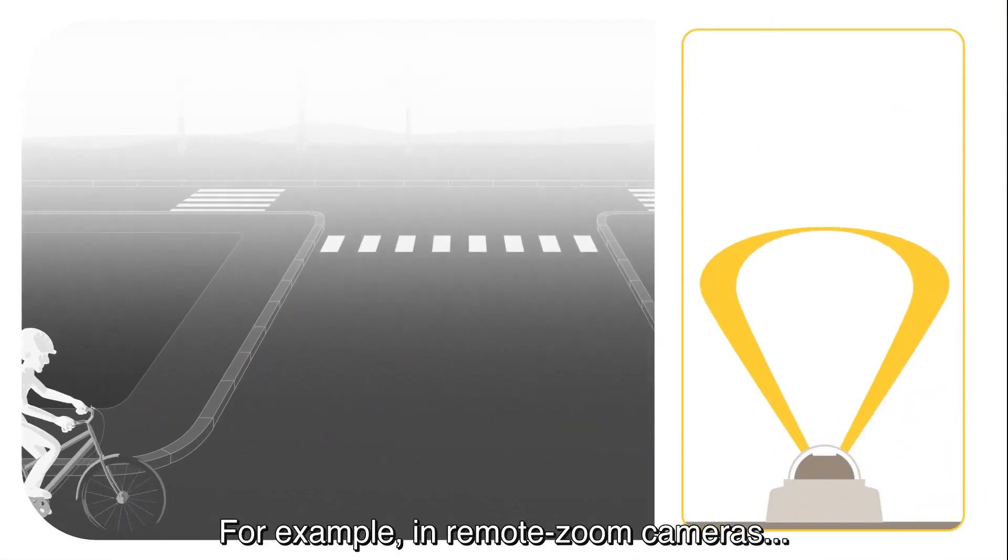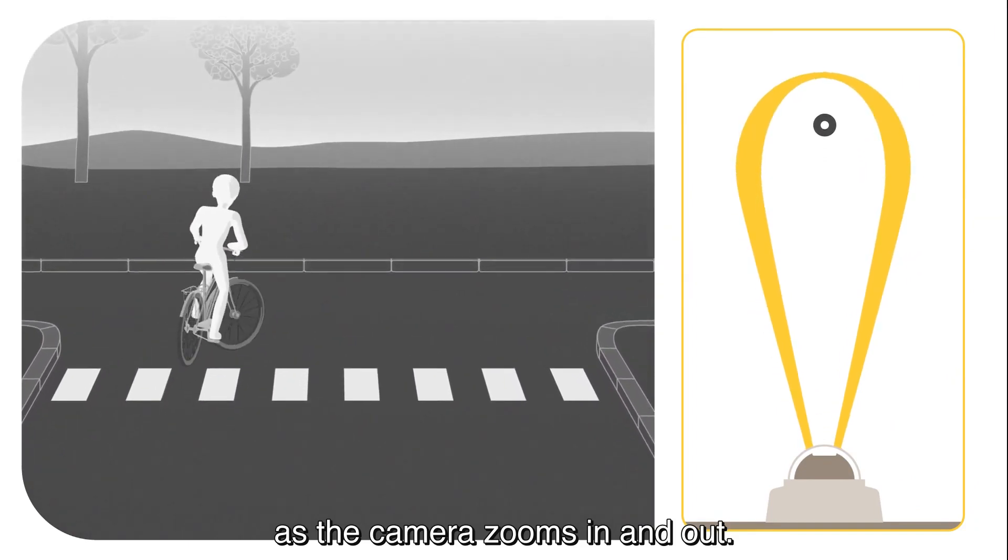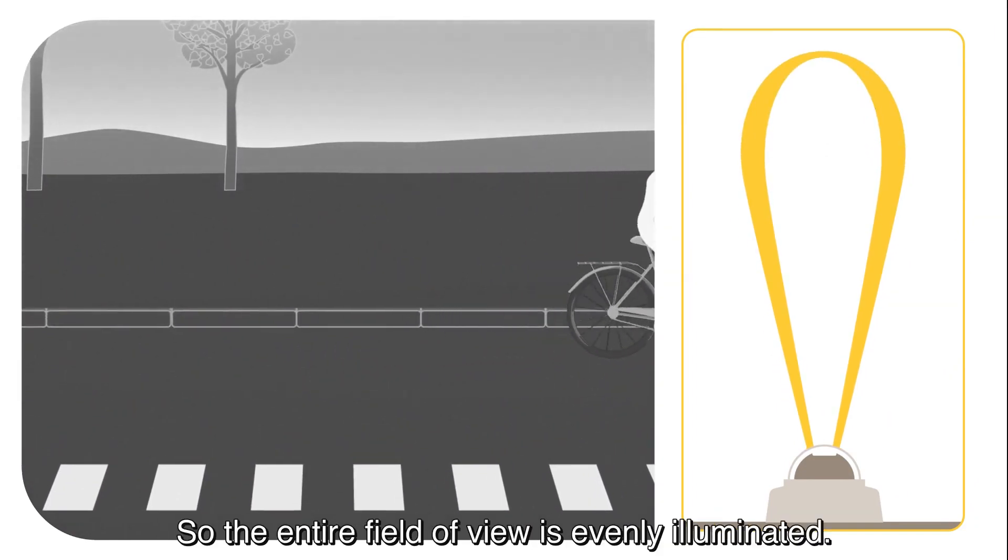For example, in remote zoom cameras the angle of illumination adapts as the camera zooms in and out, so the entire field of view is evenly illuminated.